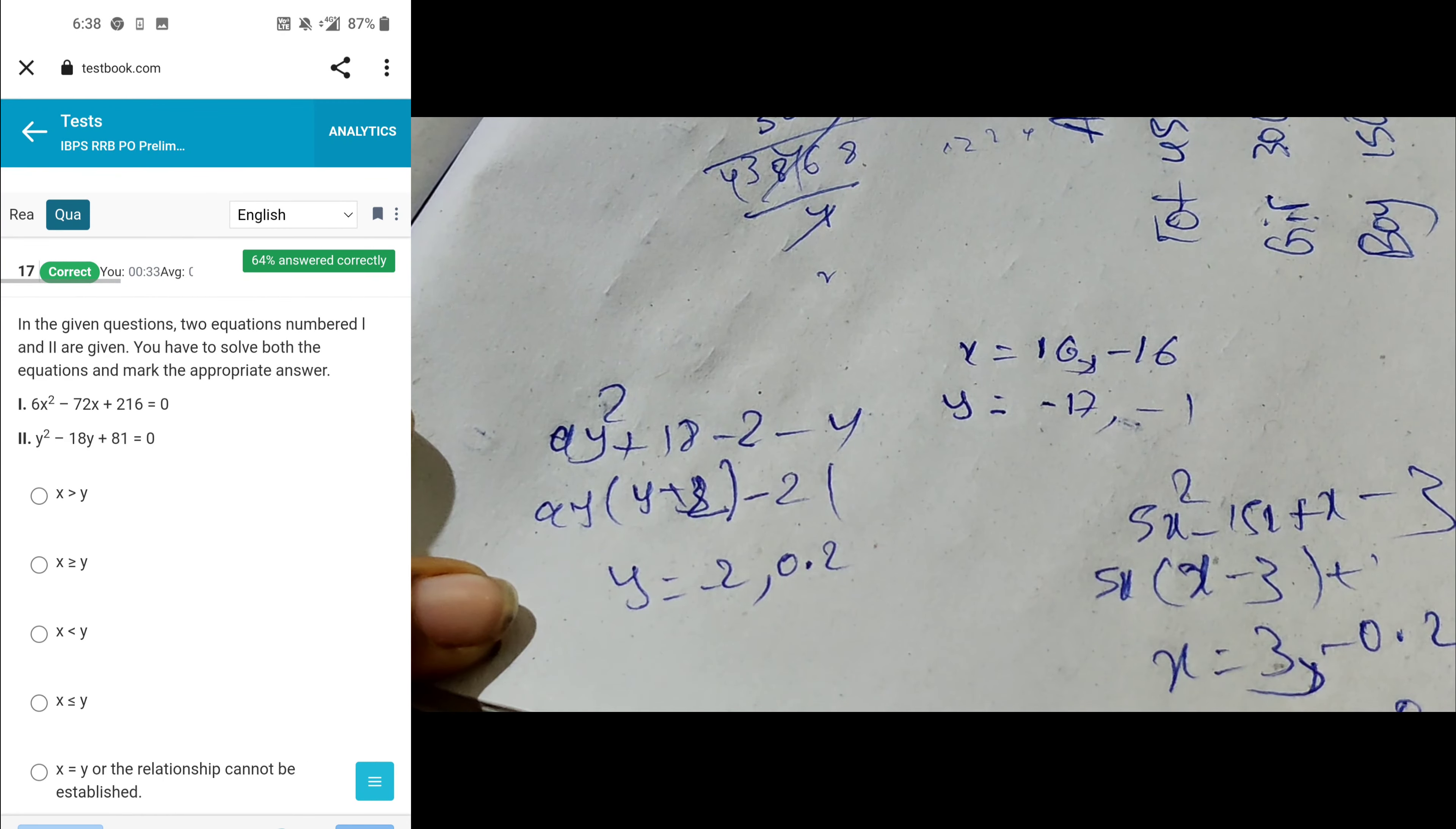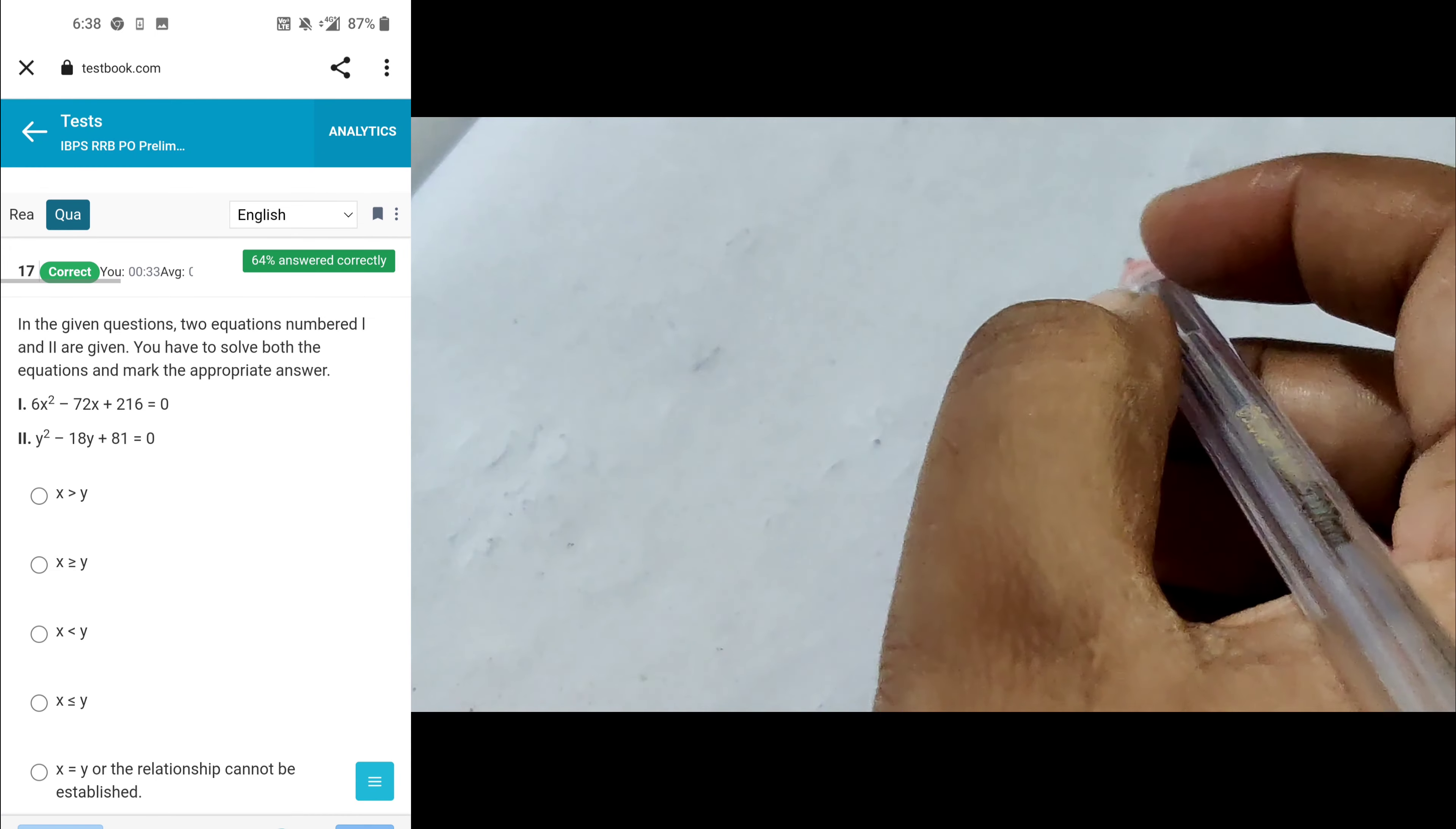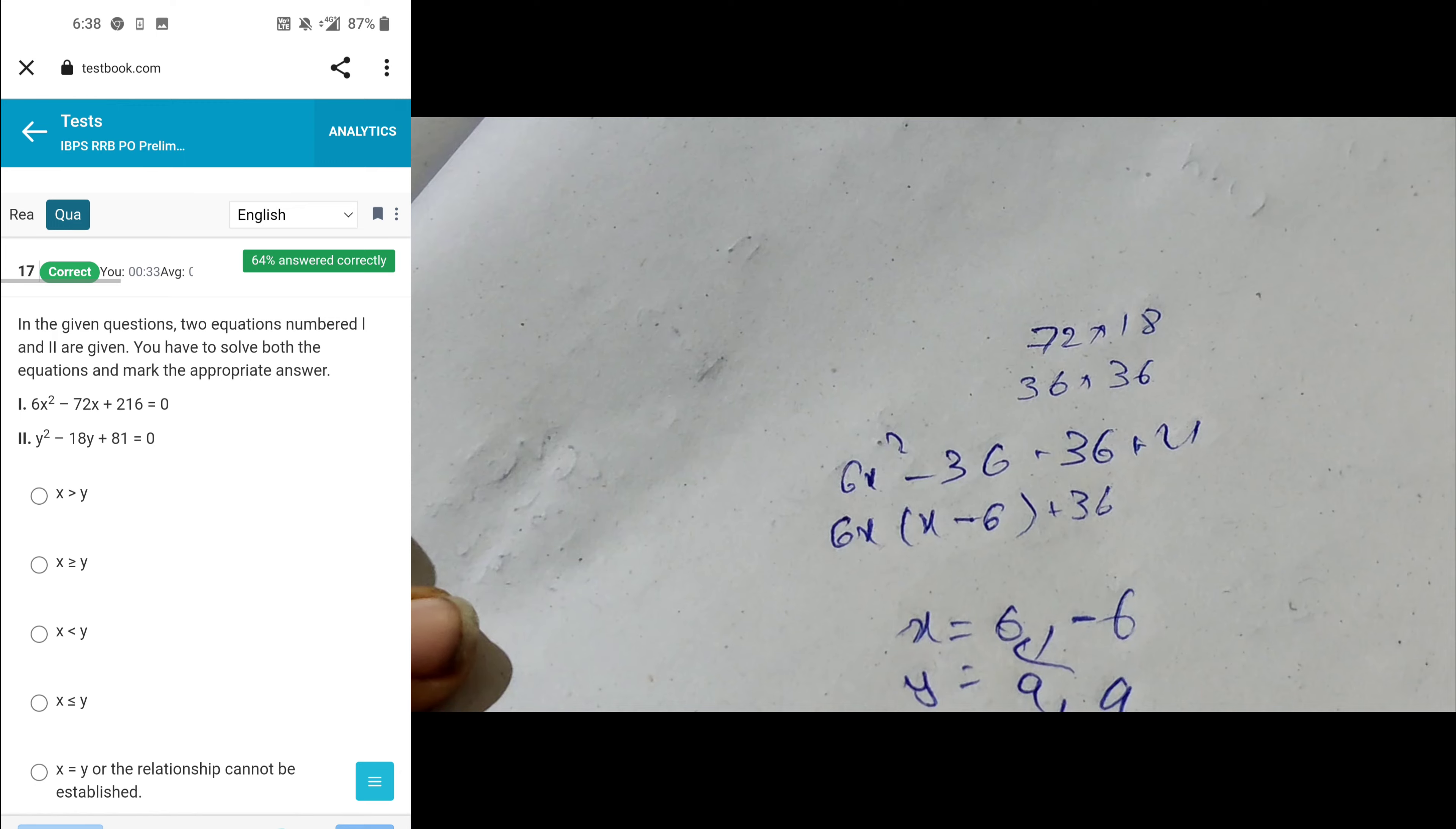So -2, 0.2, plus 0.2, so in particular it's greater than. Again it's completed. Next question, 3 cancel 7, 2, 3, 18, 36. And 36 again, 6x² minus 36 minus 36 plus 2 plus 6, x minus 6 plus 36x equals plus 6 minus 6, and y equals 9, 9. So here in both cases x less than y, option C.